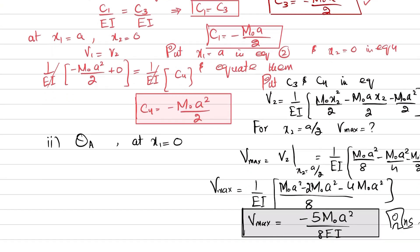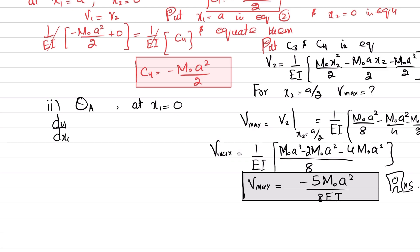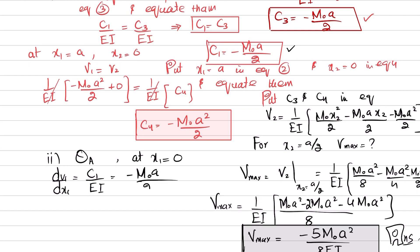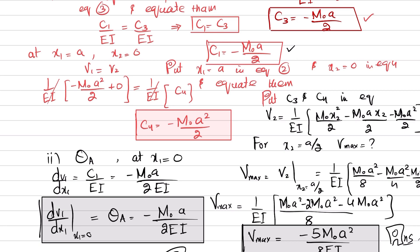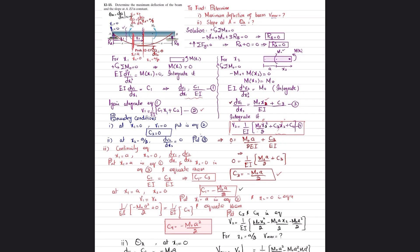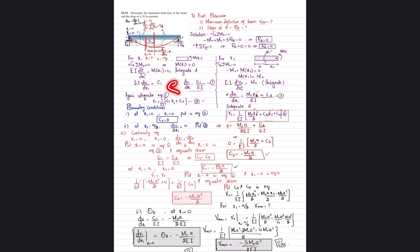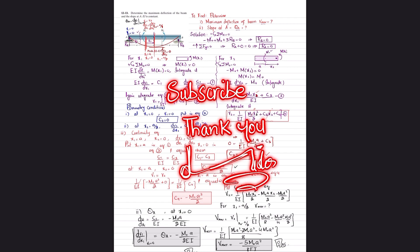Equation 1 gives dv₁/dx₁ = C₁/EI. Since there is no x term, the slope at x1 = 0 equals C₁/EI = −M₀·a/(2EI). This is the slope at point A, and that completes problem 12-13. If you're new to the channel, subscribe and press the bell icon for notifications. Ask any questions in the comments — thank you for watching.